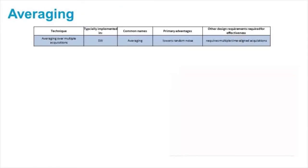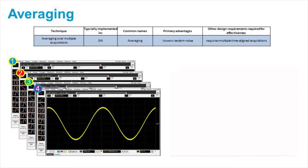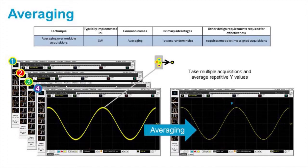Technique number two is averaging. Averaging requires multiple oscilloscope acquisitions, and what happens is as the oscilloscope is acquiring over multiple acquisitions, it will average each individual point, thereby eliminating noise associated with the oscilloscope.